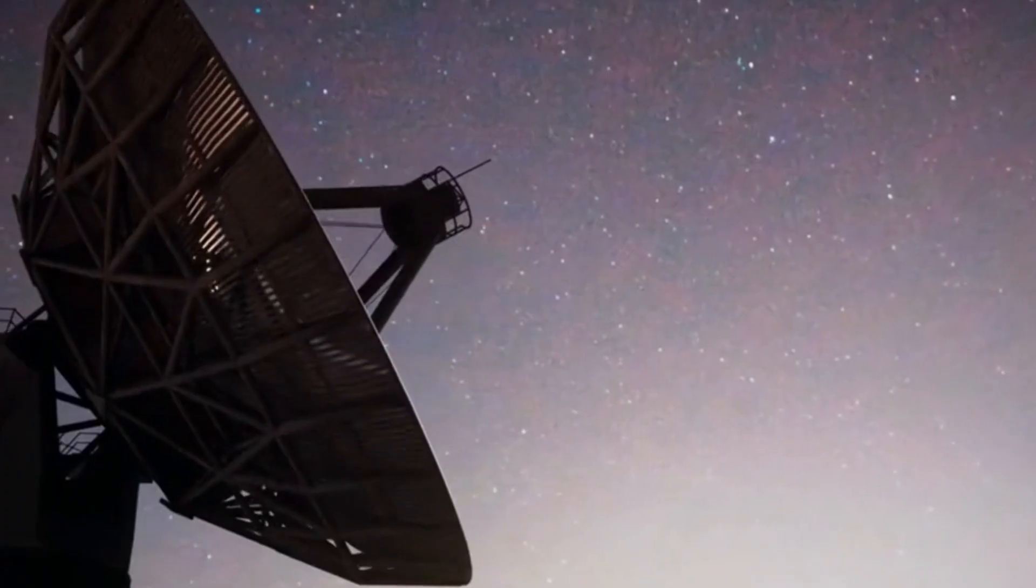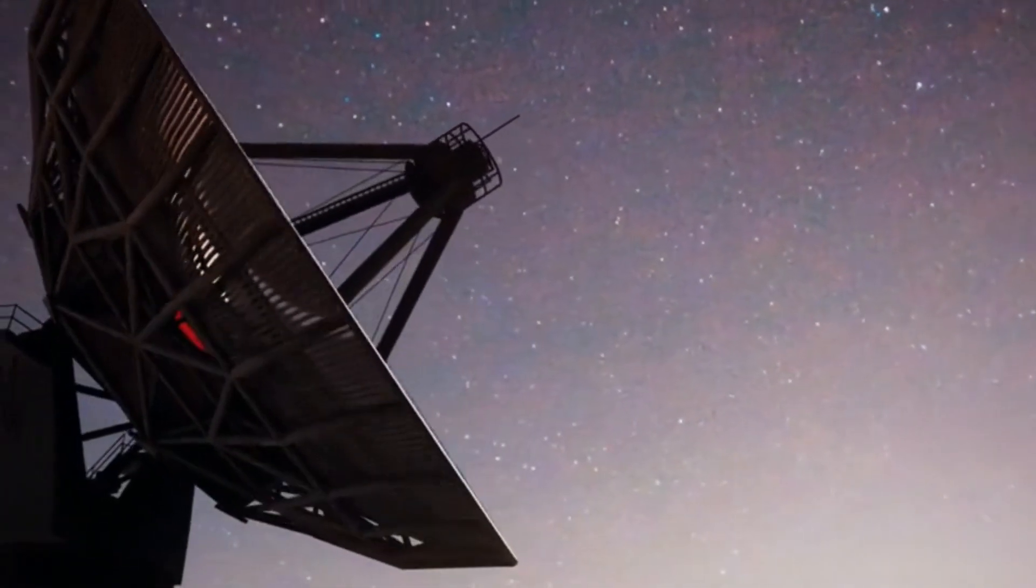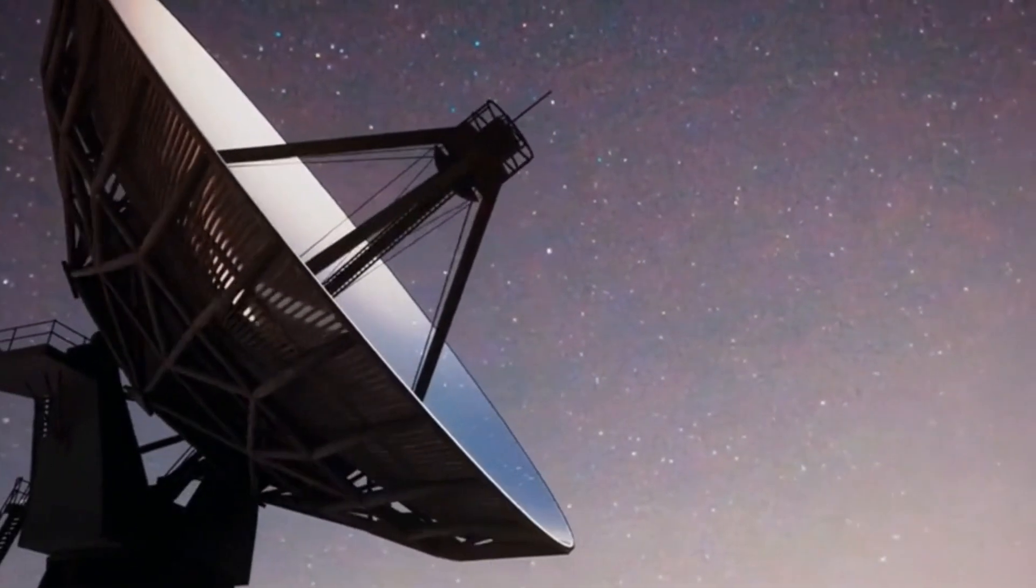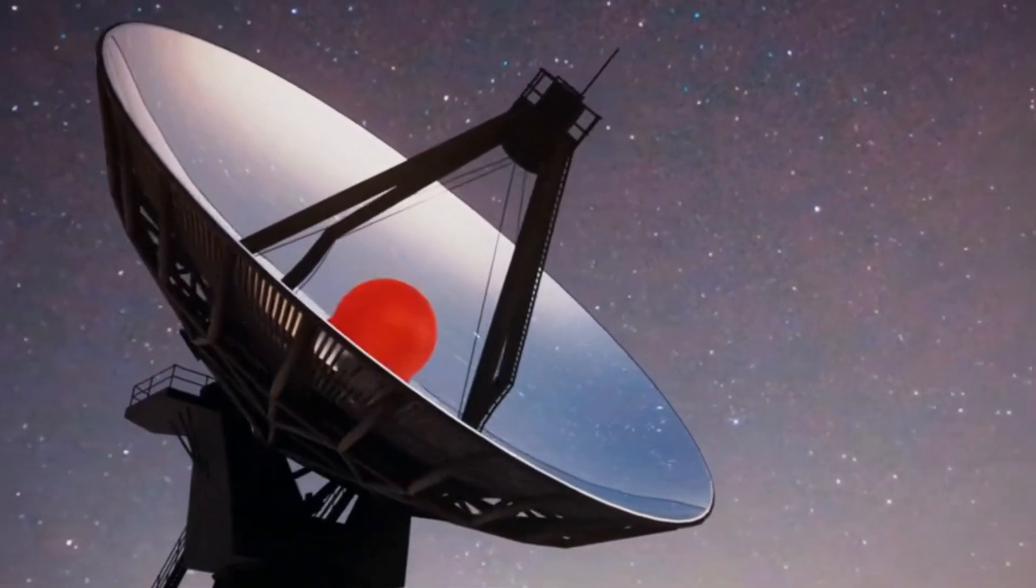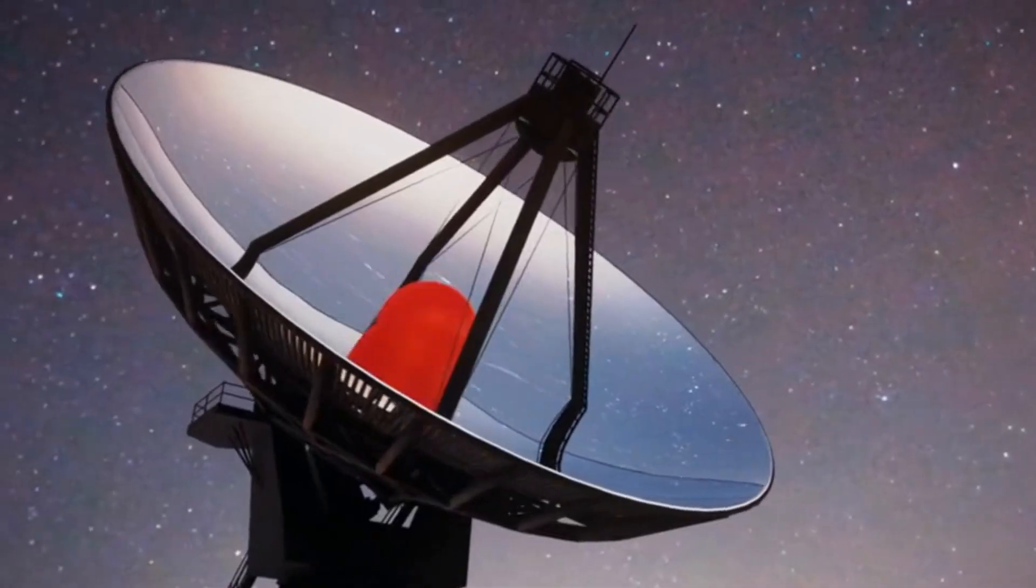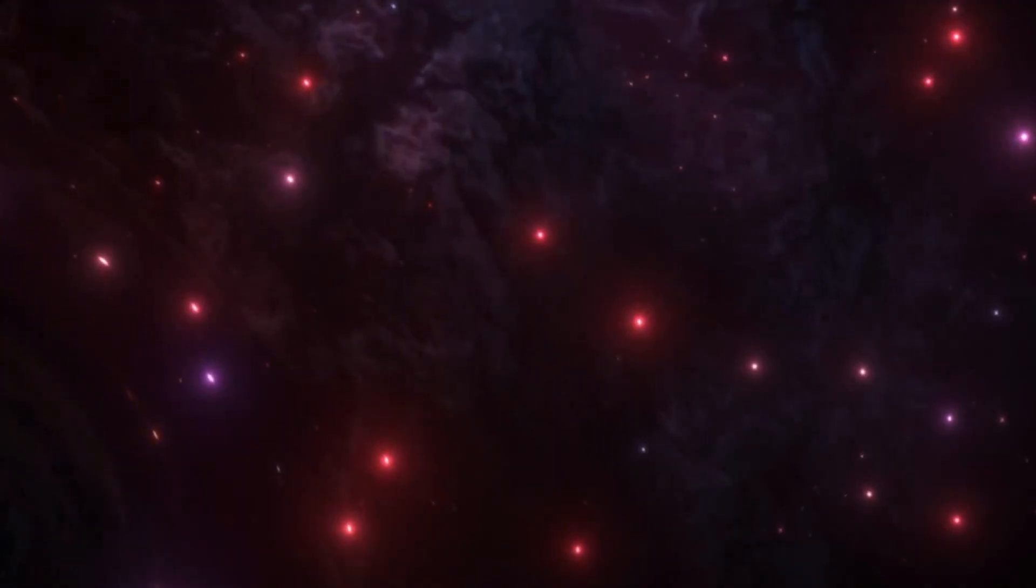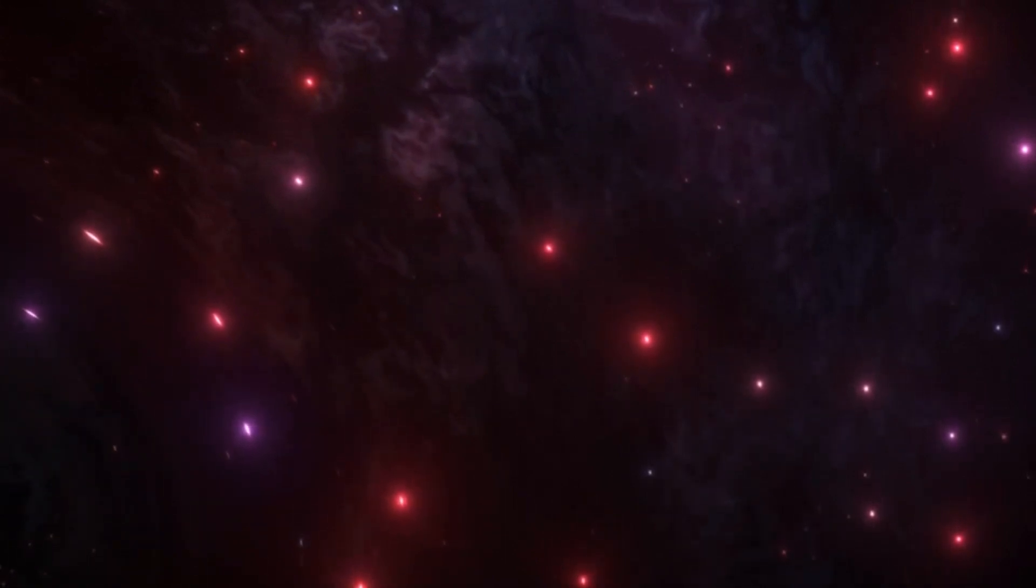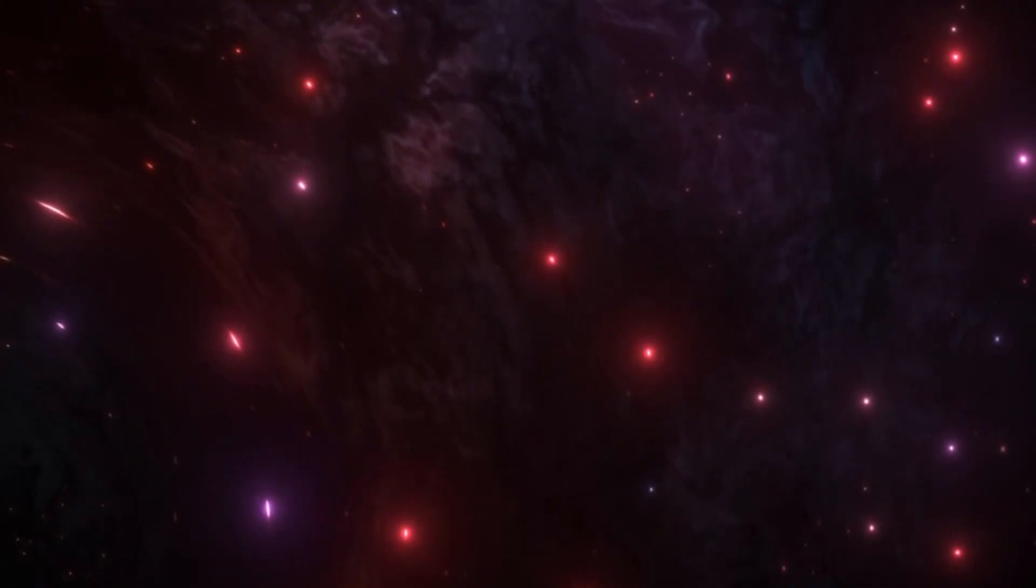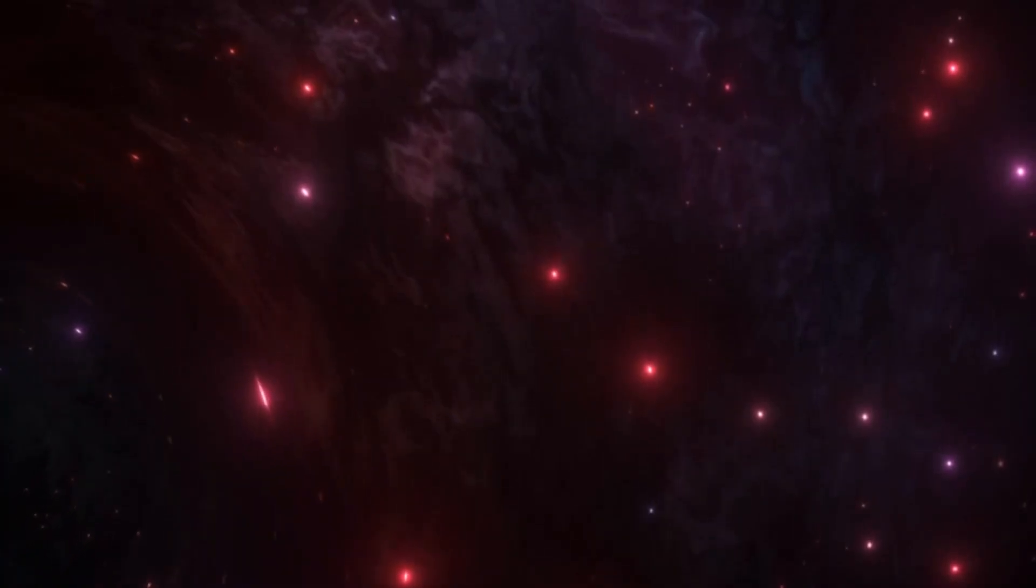This effect, predicted by general relativity, has been observed in numerous instances, allowing astronomers to study objects that would otherwise be too faint or distant to detect. In the case of the 700 galaxies, it's possible that their light is being bent and magnified by the black hole, giving us a view of objects that exist outside the black hole's event horizon but appear to be trapped within.